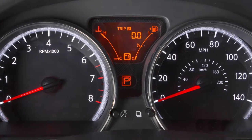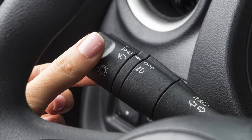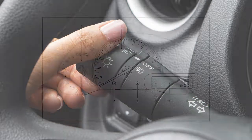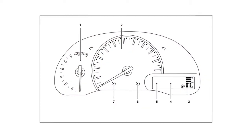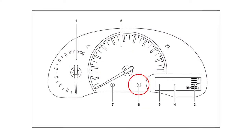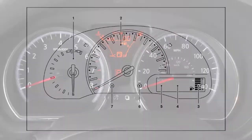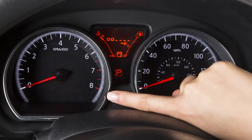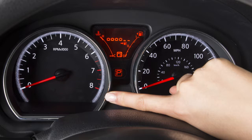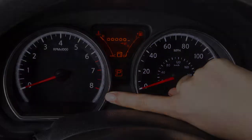Your instrument panel lights up whenever the ignition is on and the headlights or the parking lights are on. Depending on the instrument cluster for your vehicle, push this control to the right of your speedometer or this control to the right of your tachometer to adjust the brightness of the instrument panel lights to the desired level.